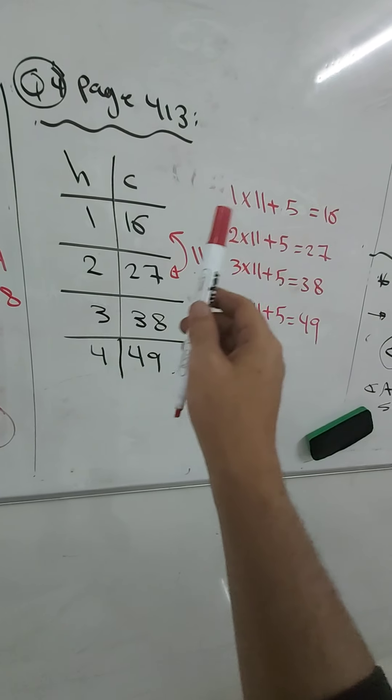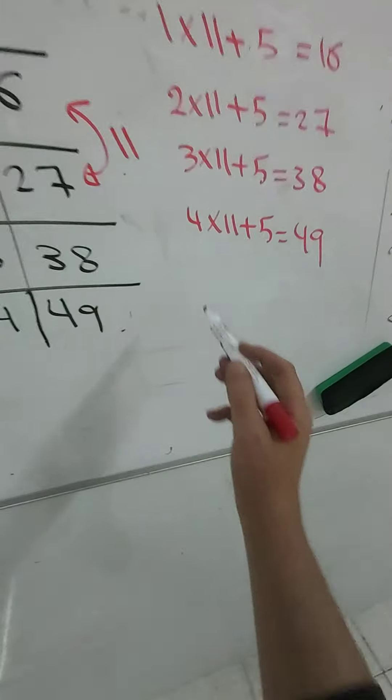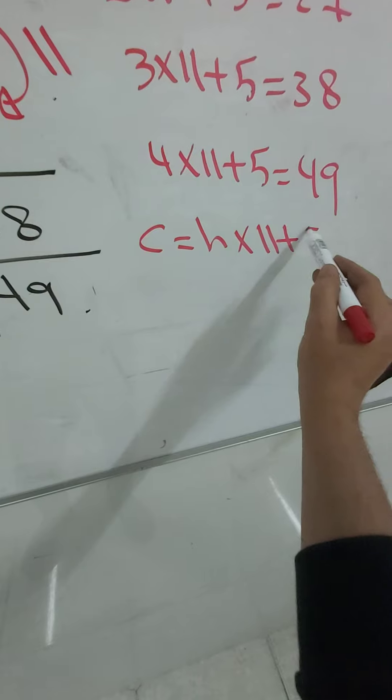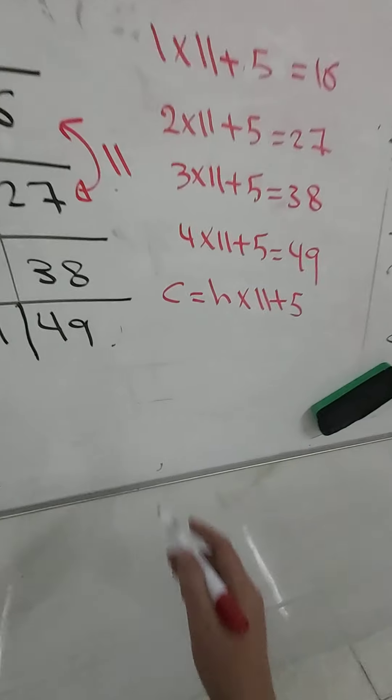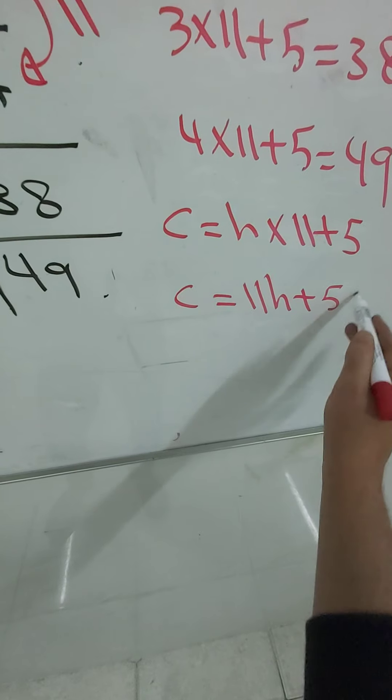So I multiply h by 11, add 5, you got c. So c equals h multiplied by 11, h plus 5. And we can write it as c equals 11h plus 5.